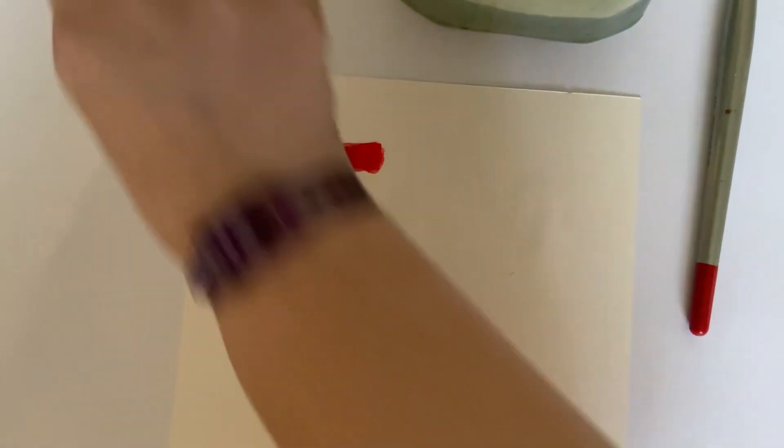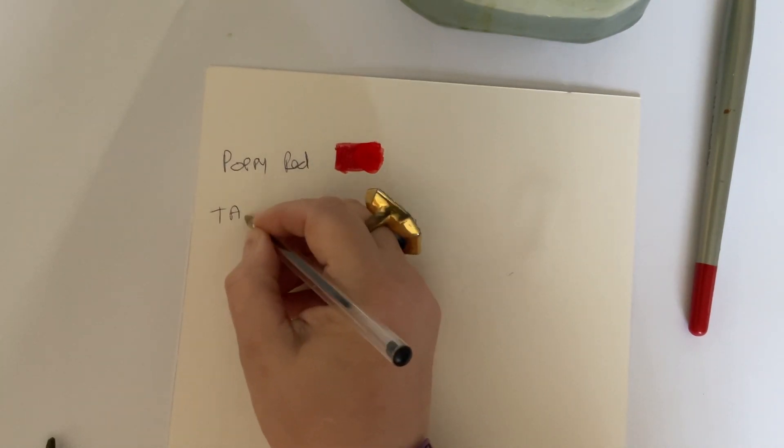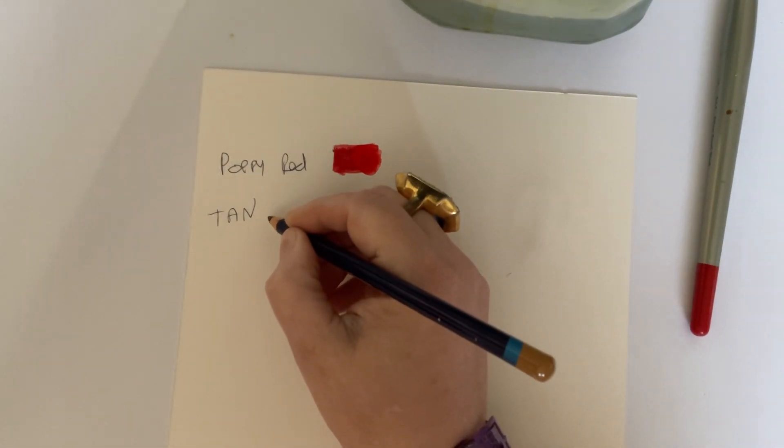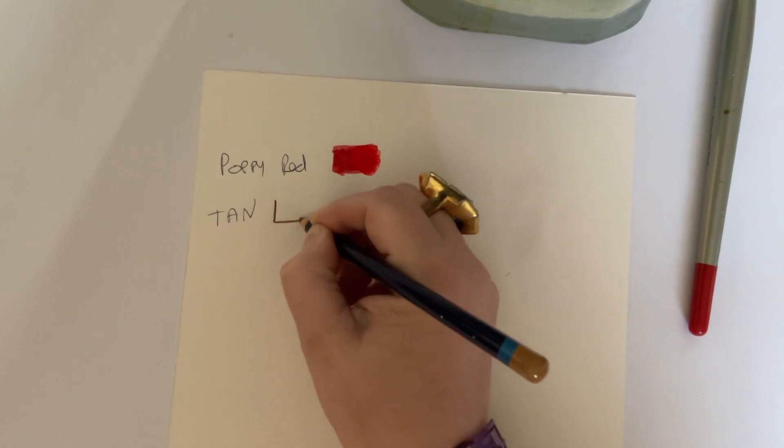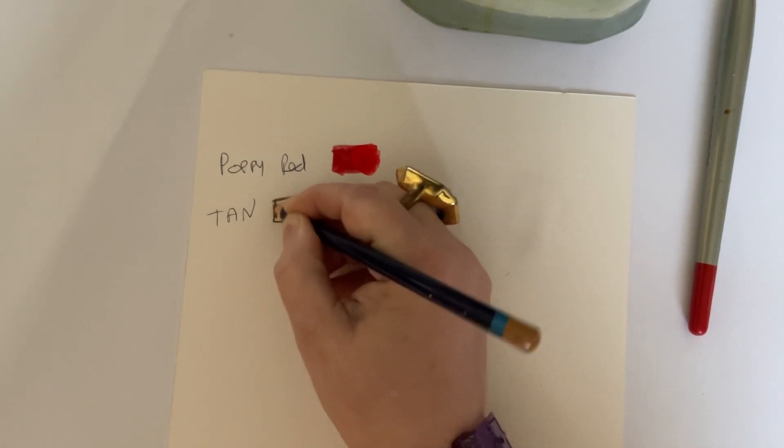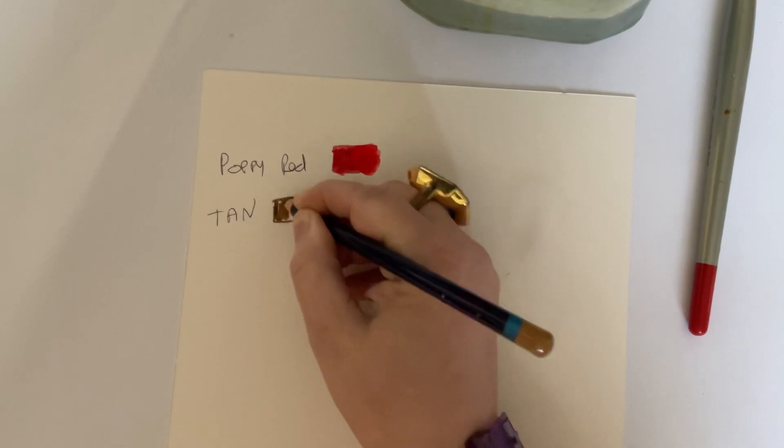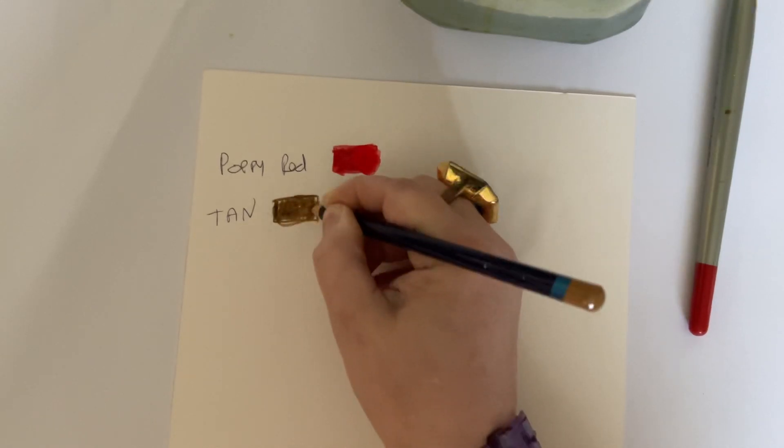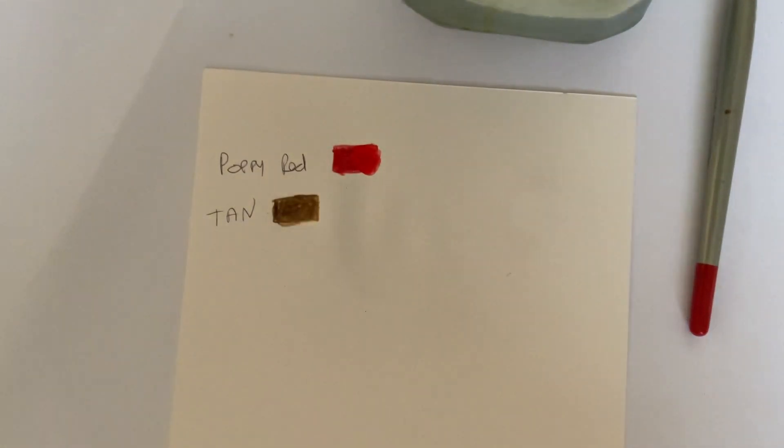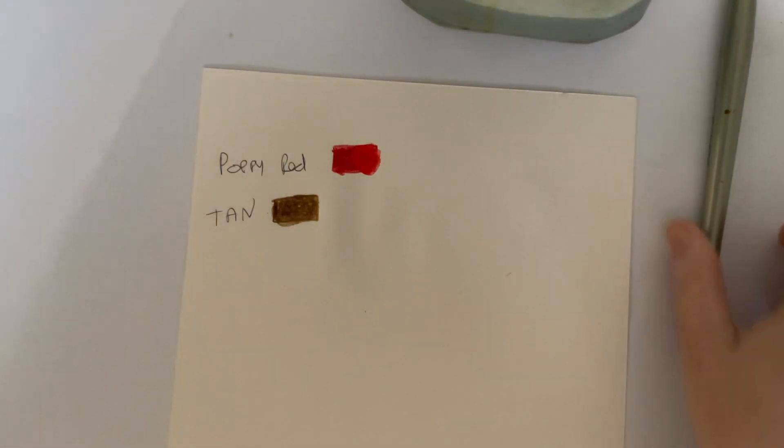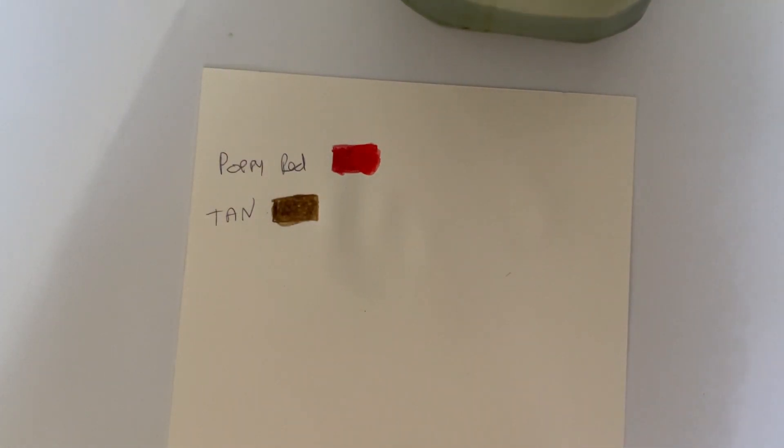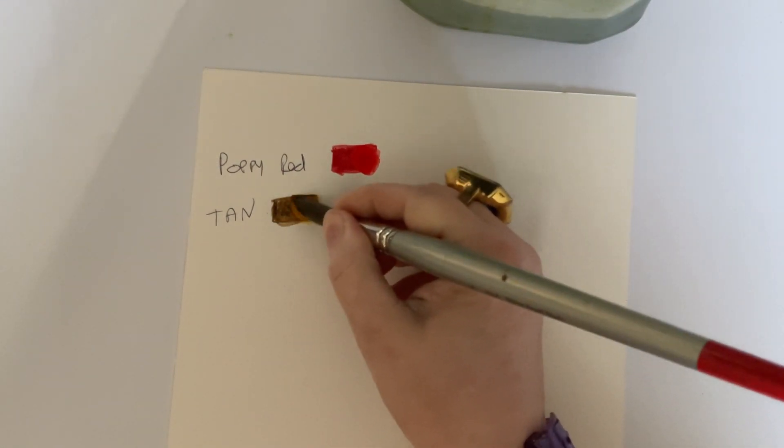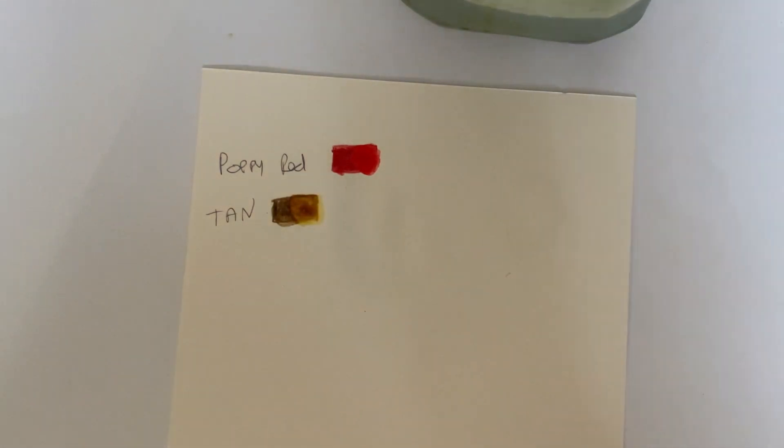Back to our color chart: leave that bit dry and just add water to the second bit, because that way you can look at your color chart and tell what they look like dry if you want to do dry blending pencils, and what it looks like wet. So again with our tan, we'll just write down here tan because that's what it's called.